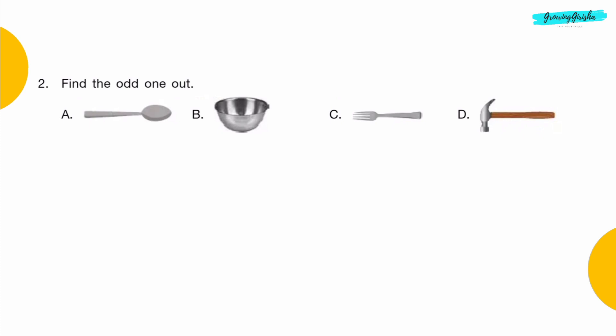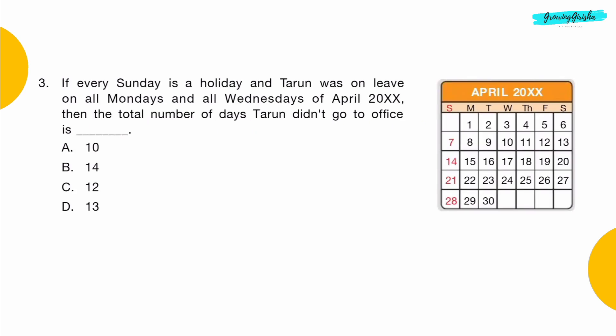Question 2: Find the odd one out. Option D: Hammer.